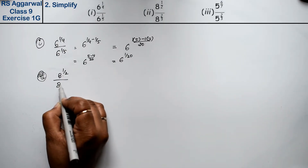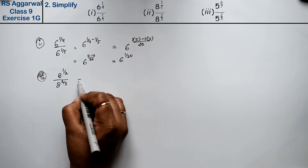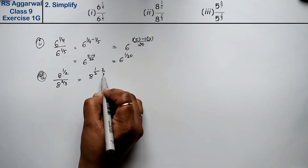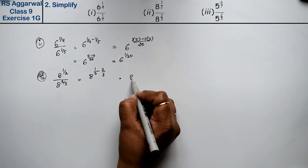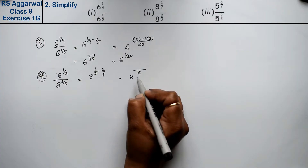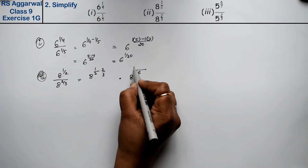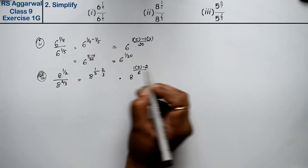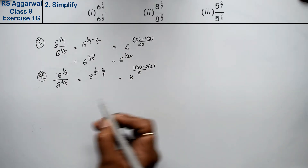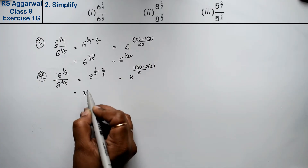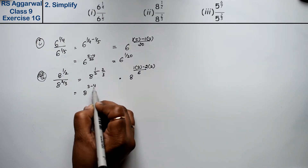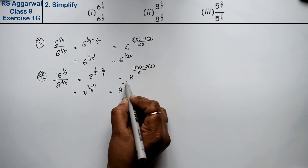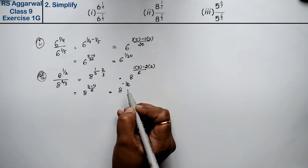Second part is eight ki power one upon two divided by eight ki power two upon three. Base same hai, to eight ki power one upon two minus two upon three. LCM liya — three, two — twenty six, six. Is one ki multiplication three mein — three. Minus two ki multiplication two mein — four. Toh aa gaya eight ki power three minus four upon six.